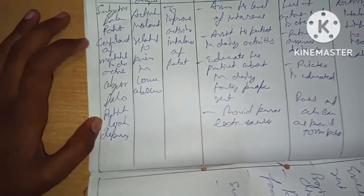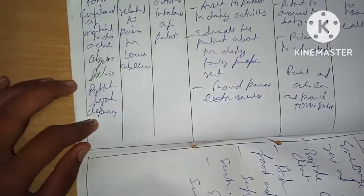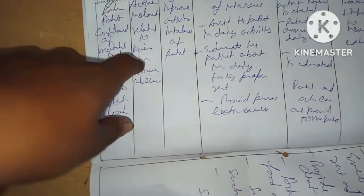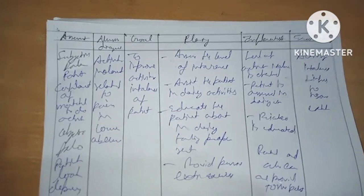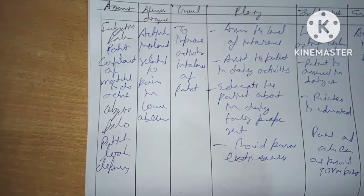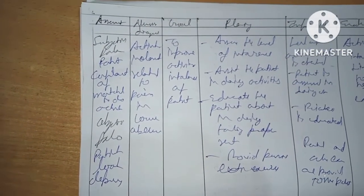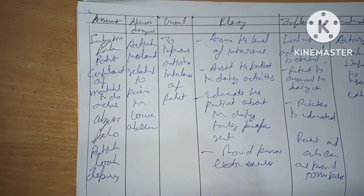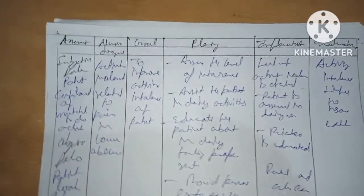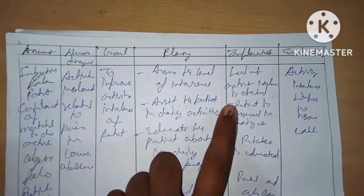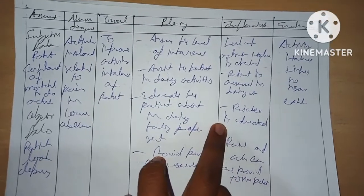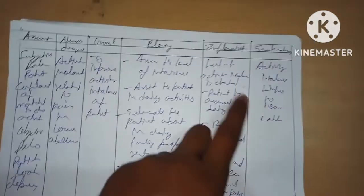NCP 3: Subjective data — patient complains of difficulty and distress. Objective data — patient looks depressed and is intact. Nursing diagnosis: activity intolerance related to pain in lower abdomen. Goal: to improve activity tolerance. Planning: assess the level of intolerance, assist patient in daily activities, educate patient about daily activities, provide comfortable position. Evaluation: activity intolerance reduced to some extent.